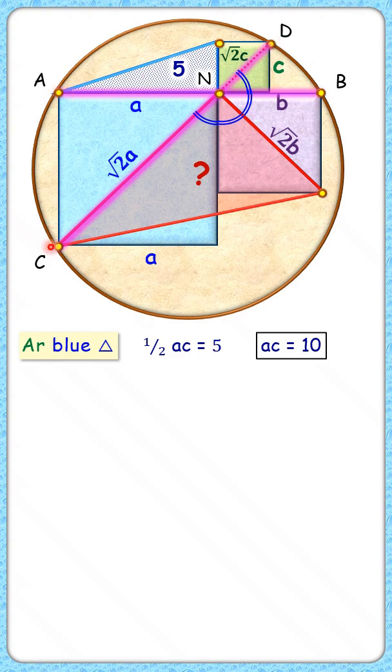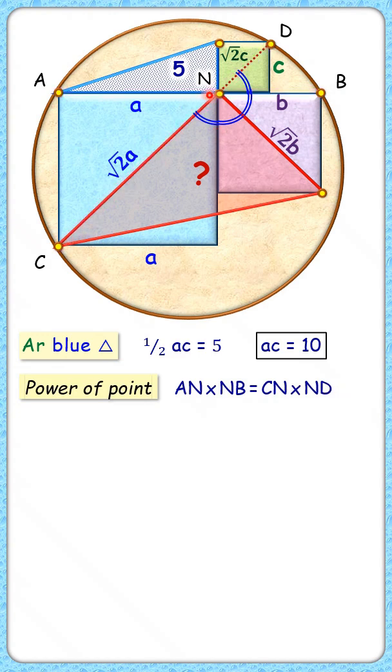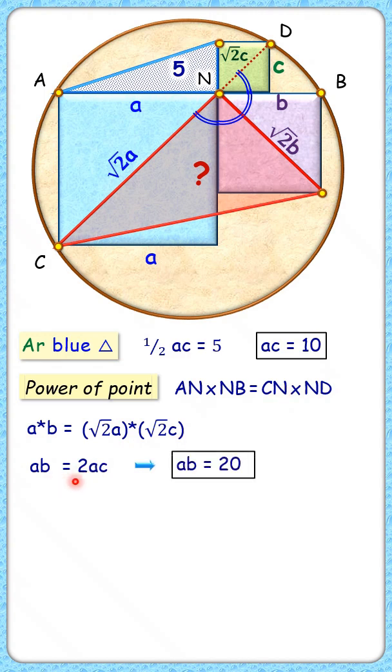So we have got two chords ab and cd intersecting at point n. Applying power of point theorem, we get AN times NB is CN times ND. Putting the values here, we get a times b is root 2a times root 2b, or a times b. Now ac is 10, so a times b is 20.